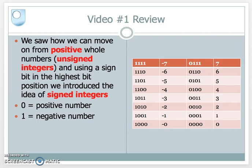Now we want to move on a little bit further. We saw from that previous video that we can use the left-hand bit, or the highest bit, as what's called a sign bit. We can put in there either a 0 or a 1 to represent a positive number or a negative number. The table on the right is the 4-bit table we had in that video. You can see minus 7 is 1 1 1 1 — the 1 says it's negative and the three 1s are the binary representation for 7. And 0 1 1 1 — the 0 says it's positive. So we can represent negative numbers in binary format.